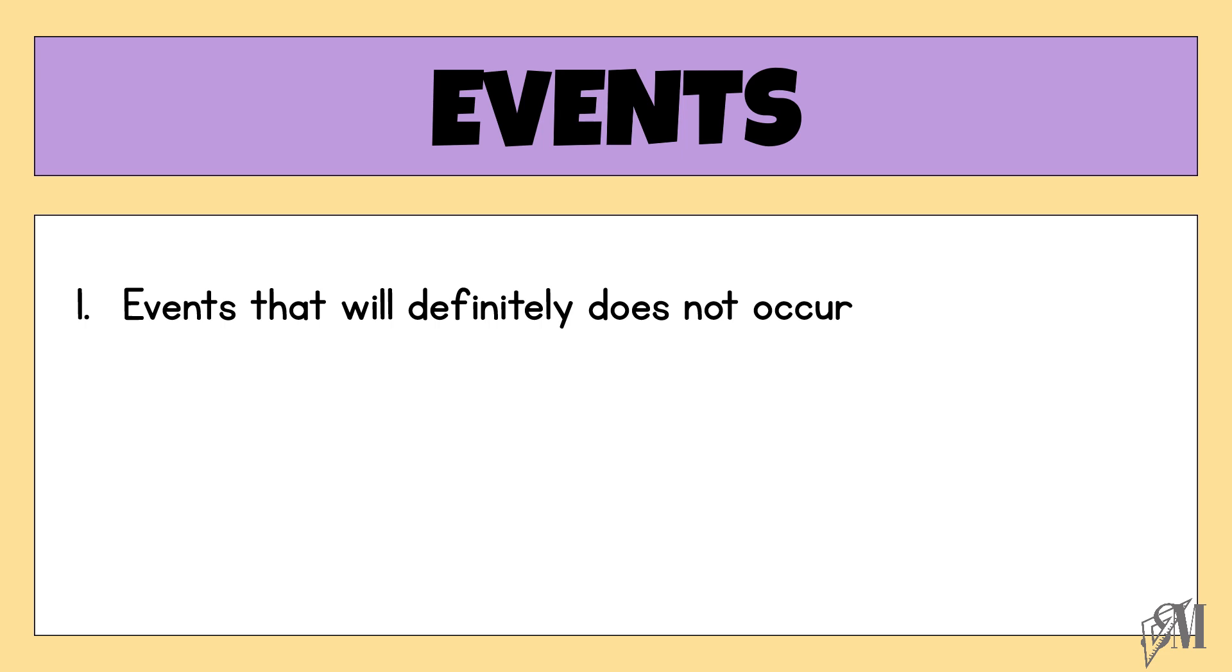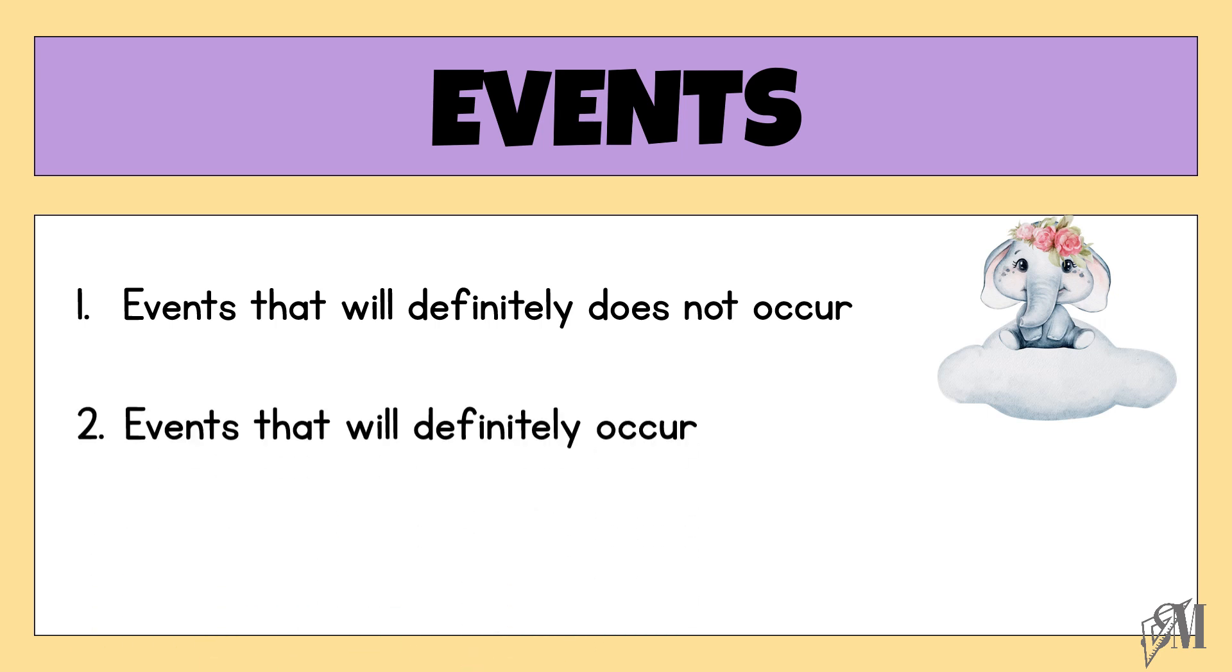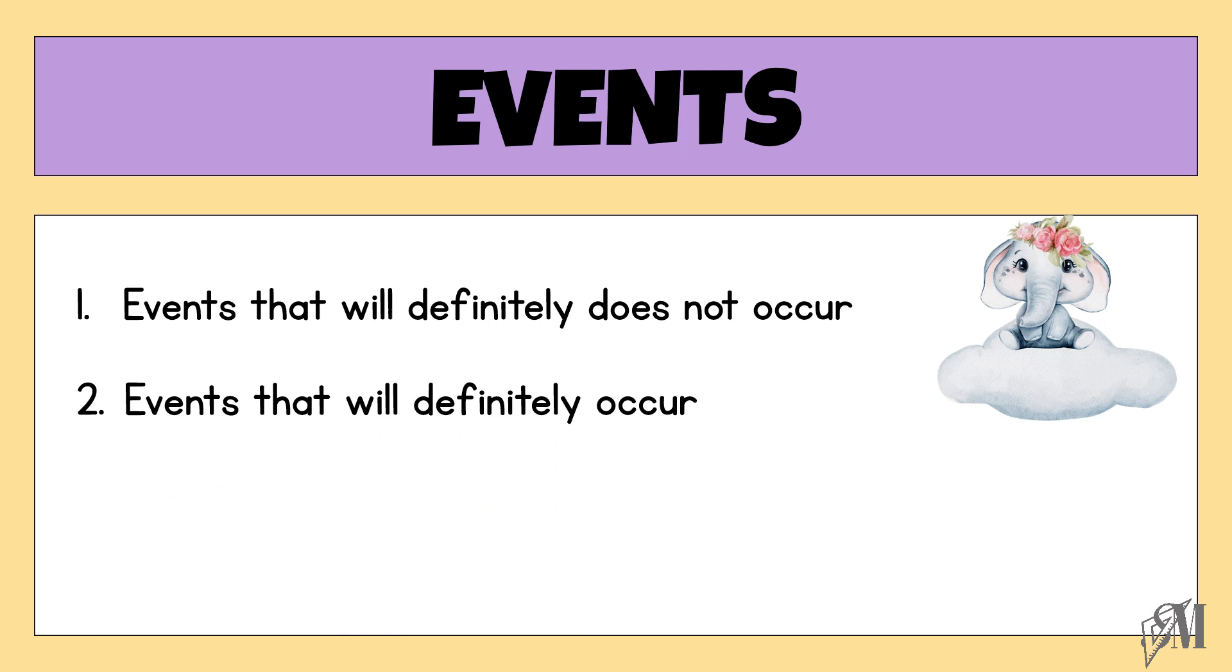The first type of event is events that will definitely not occur, something like elephants flying that will never happen. The second type of events are events that definitely will occur, just like the sun rising from the east.